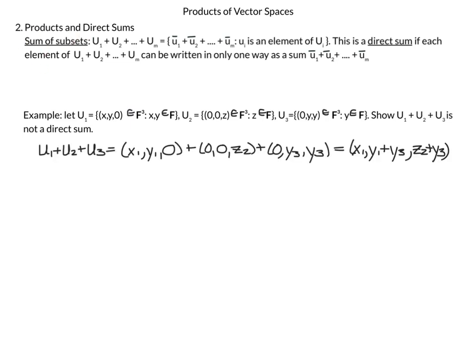First, we find the sum U1 plus U2 plus U3. A vector from U1 is (x1, y1, 0), from U2 is (0, 0, z2), from U3 is (0, y3, y3). Adding these together gives (x1, y1+y3, z2+y3). I use subscripts to avoid confusing which set each element comes from. This looks a lot like F3 — we have three different scalars from our field, so it equals F3. In some sense U1, U2, U3 partition F3: together they come back to form all of F3.